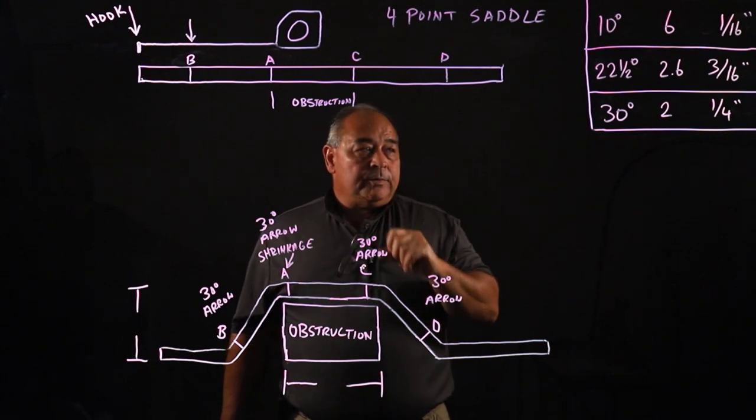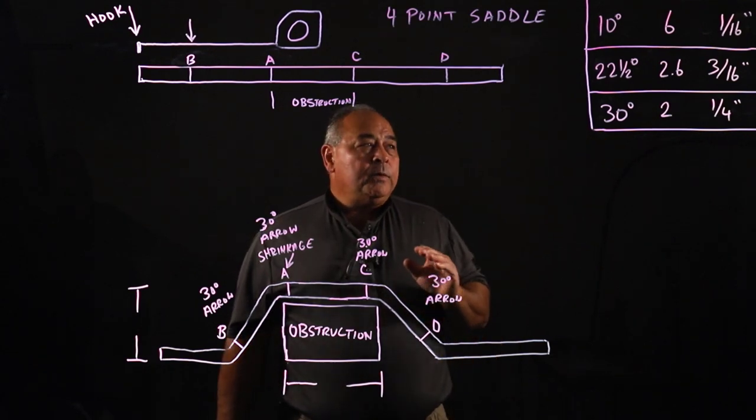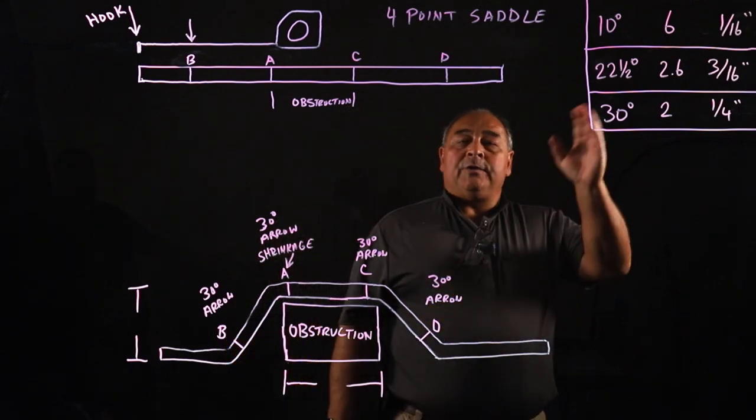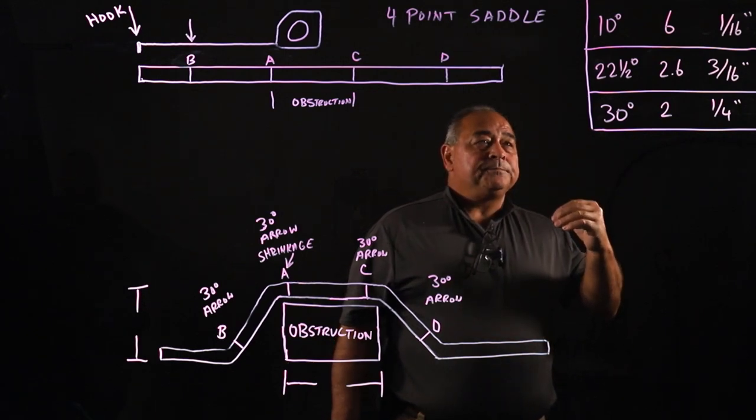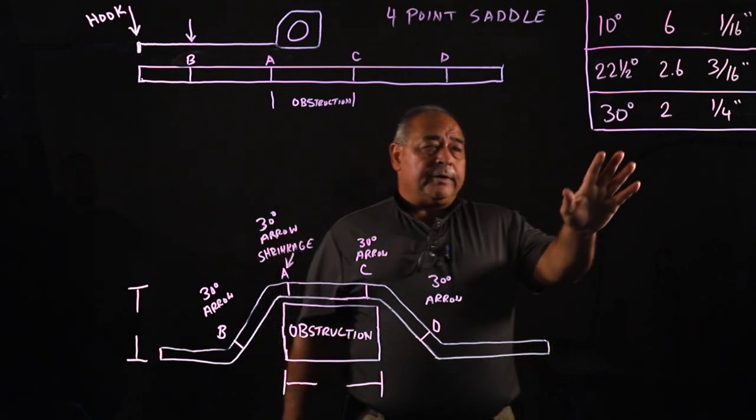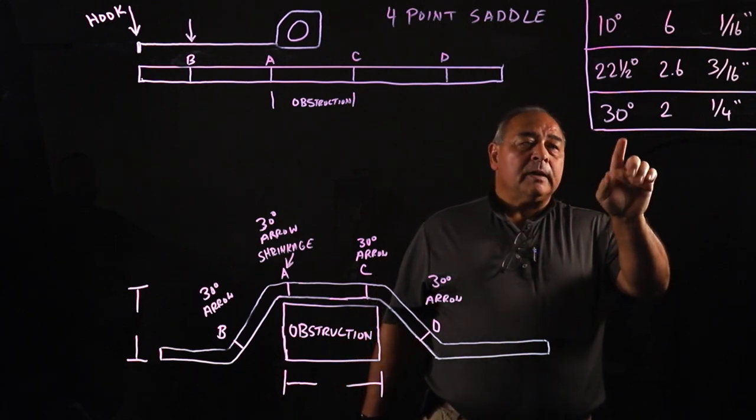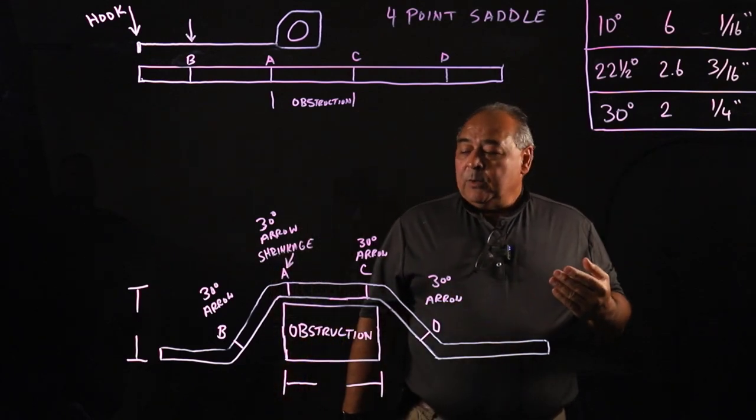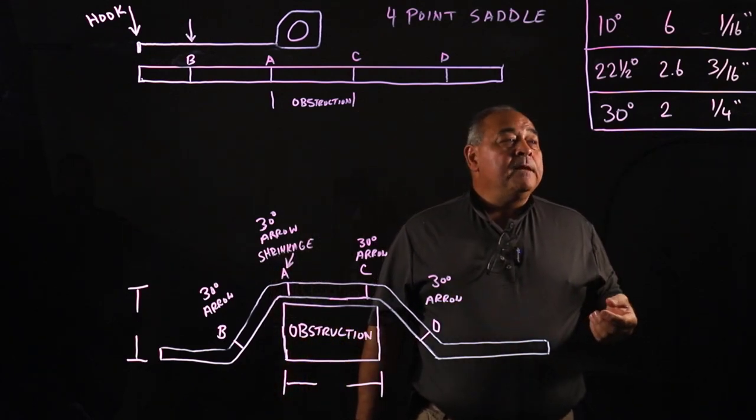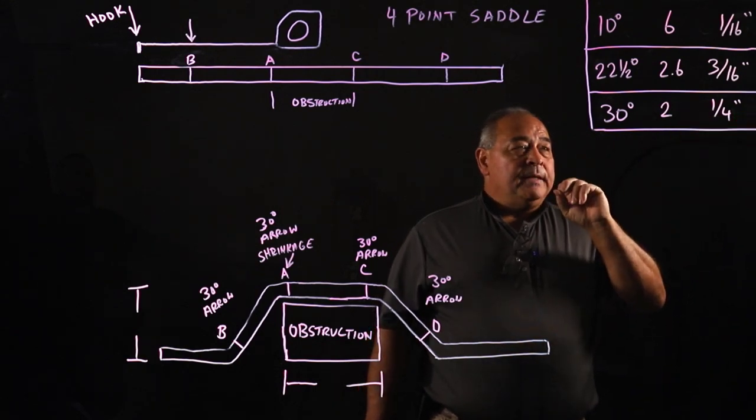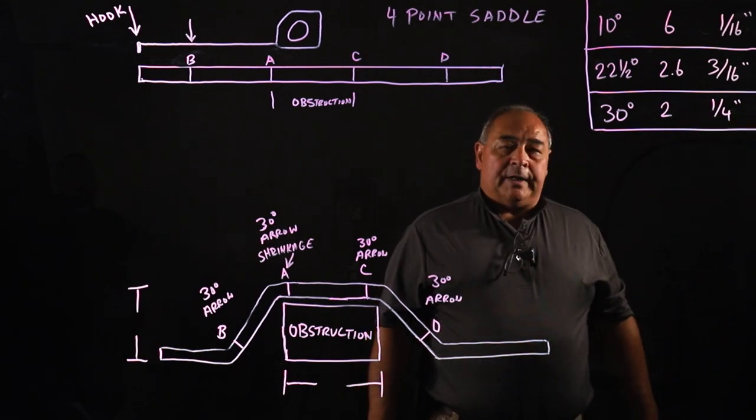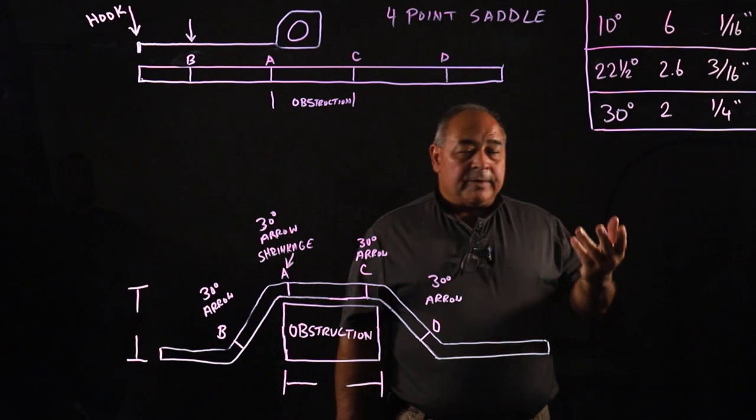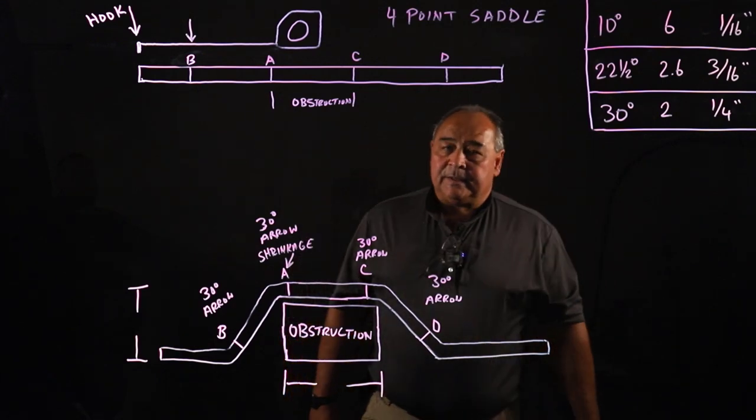For thirty degree, which is our go-to degree because it's so easy for math, it's so easy on a bender compared to the others. The others are a little bit harder to find, the others are a little bit harder to figure for. Thirty degree is our go-to. Because our multiplier between the two marks is going to be two. So whatever our raise is going to be, multiply it by two. And then our shrinkage is a quarter inch for every inch of raise. So that's easier to figure than a sixteenth or three-sixteenths. A quarter inch is easy to understand.